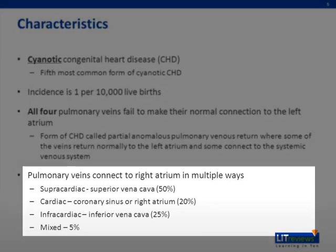In total anomalous pulmonary venous return, the pulmonary veins connect to the right atrium in multiple ways. The supracardiac type is the most common, comprising 50% of all types, where the pulmonary veins connect to the superior vena cava via a vertical vein. In the cardiac type, the veins connect to the coronary sinus or directly to the right atrium, making up 20%. The infracardiac type, where veins connect via a descending vein to the inferior vena cava, makes up 25%. The mixed type is the most rare at only 5%, with veins connecting in various different ways.